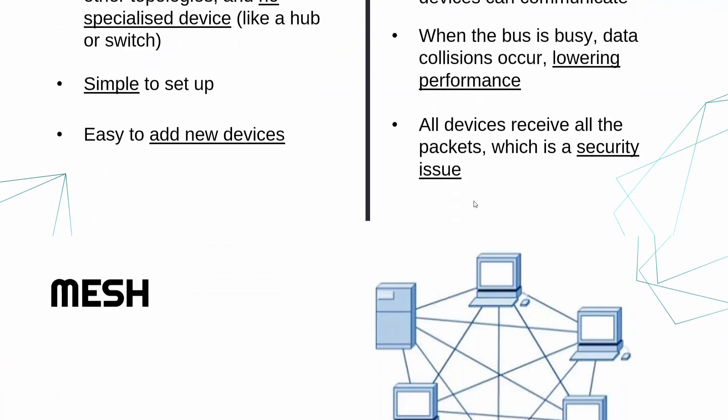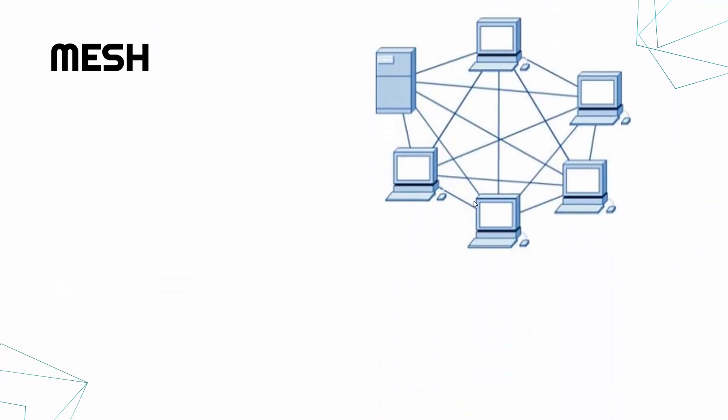Our third topology is a mesh topology, which does give us a clue as to what it looks like. A bus topology, you might just think of an actual bus. But mesh, like mesh clothing, mesh fencing, we've got kind of a grid crisscrossing. That is what a mesh topology looks like, kind of. Again, all these pictures are just representing. In reality, it won't look so perfect. In a mesh topology, every device is connected to every other device.